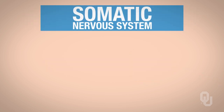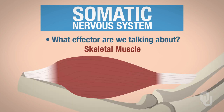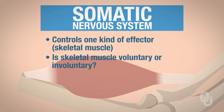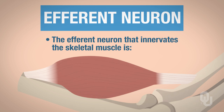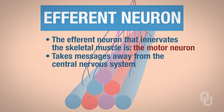Let's focus on the somatic nervous system. When I say somatic, what effector are we talking about? Skeletal muscle. The somatic nervous system controls one type of effector, and that is skeletal muscle. Skeletal muscle is voluntary. Since we are discussing skeletal muscle and the somatic nervous system, the specific name given to the efferent neuron that innervates skeletal muscle is the motor neuron — a type of efferent neuron that takes messages away from the central nervous system.